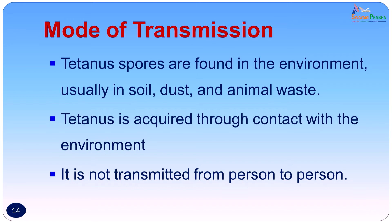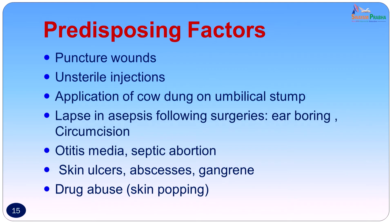How does one get tetanus? Tetanus spores are found in the environment — usually in soil, dust, and animal waste — and are acquired through contact with this environment. Roadside injuries contaminated with soil are likely to carry spores of Clostridium tetani. It is never spread from person to person. Predisposing factors include tetanus-prone wounds such as puncture wounds with depth that create anaerobic conditions facilitating spore germination. Other risk factors include unsterile injections, application of cow dung on the umbilical stump, lapses in asepsis following surgeries, otitis media, septic abortions, skin ulcers, abscesses, gangrene, and drug abuse or skin popping.